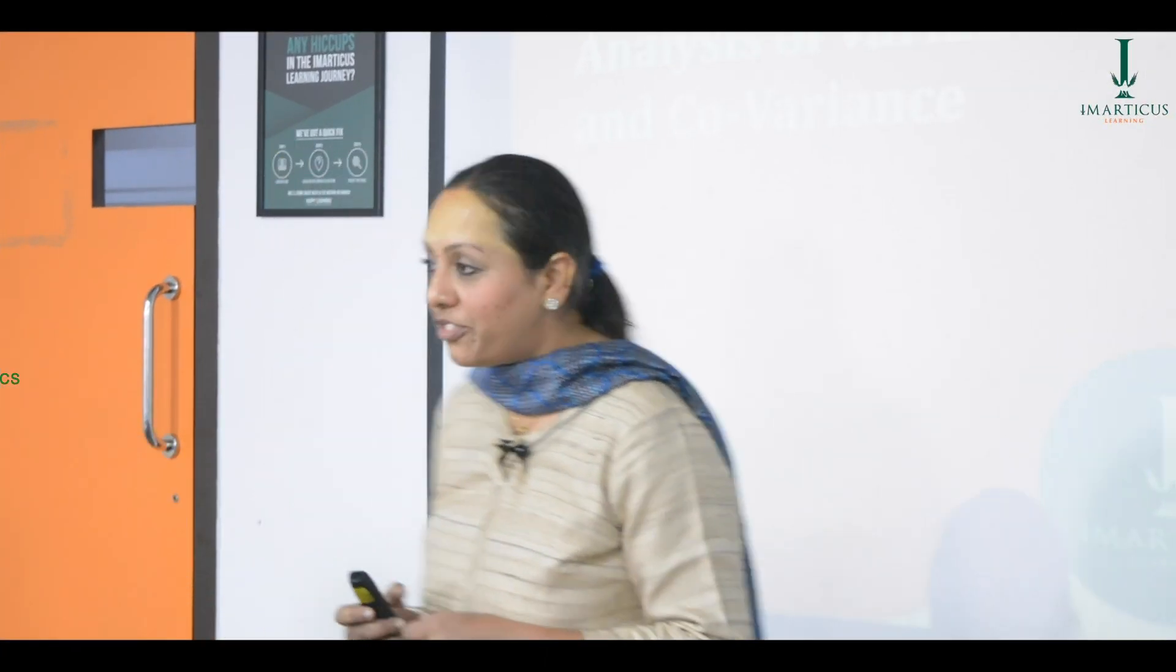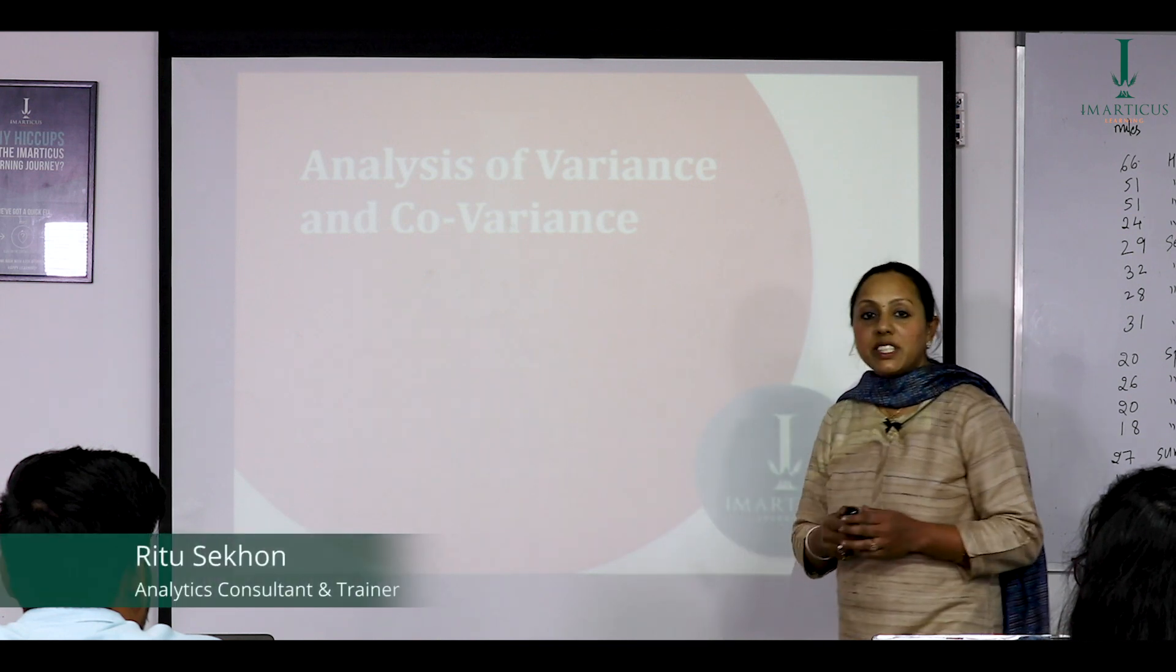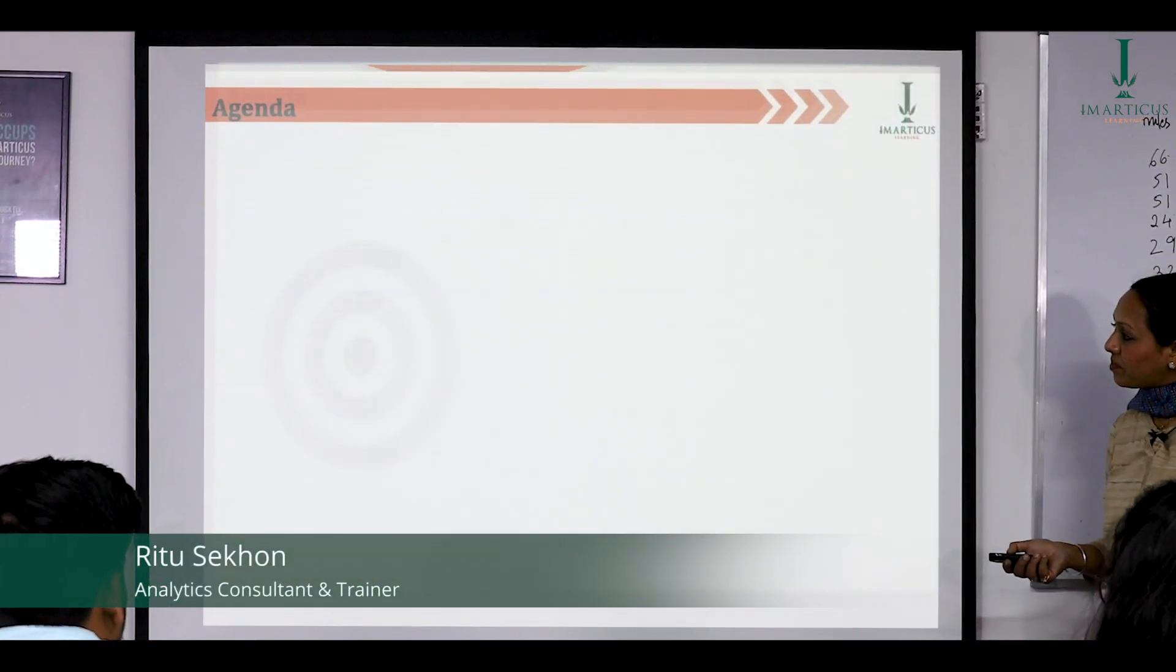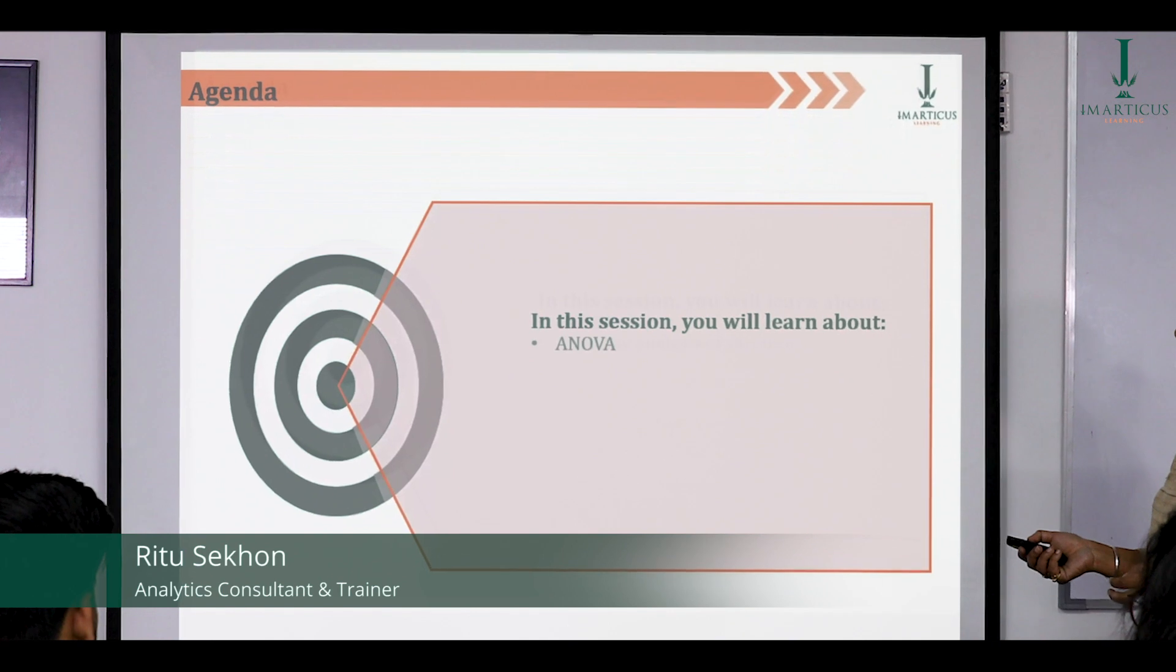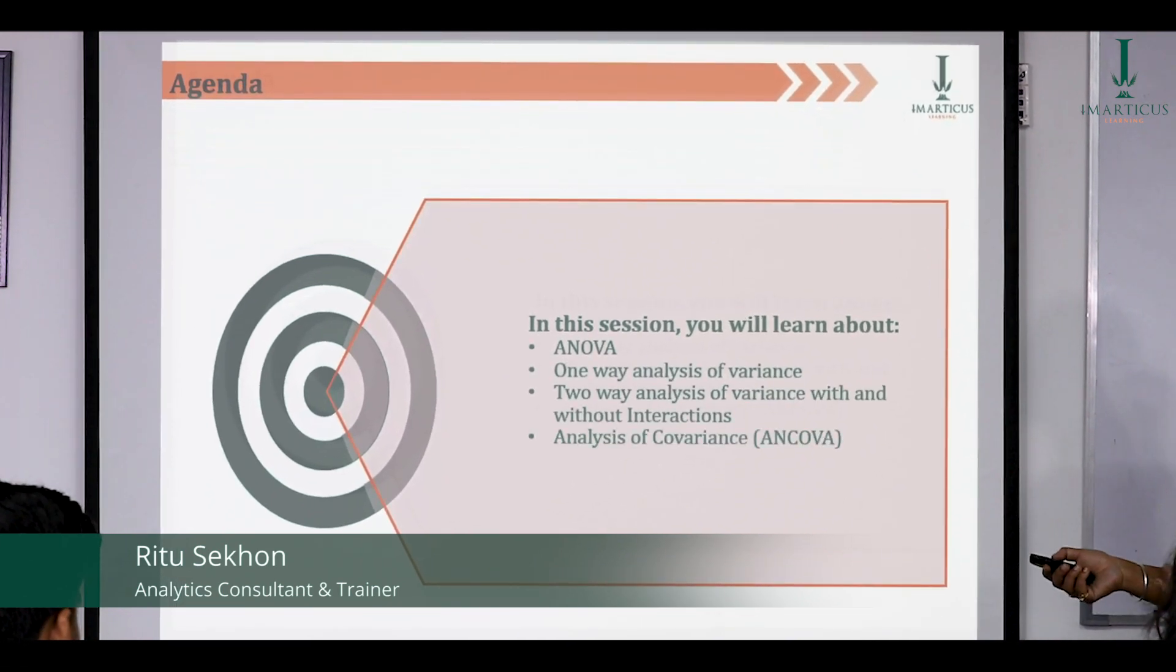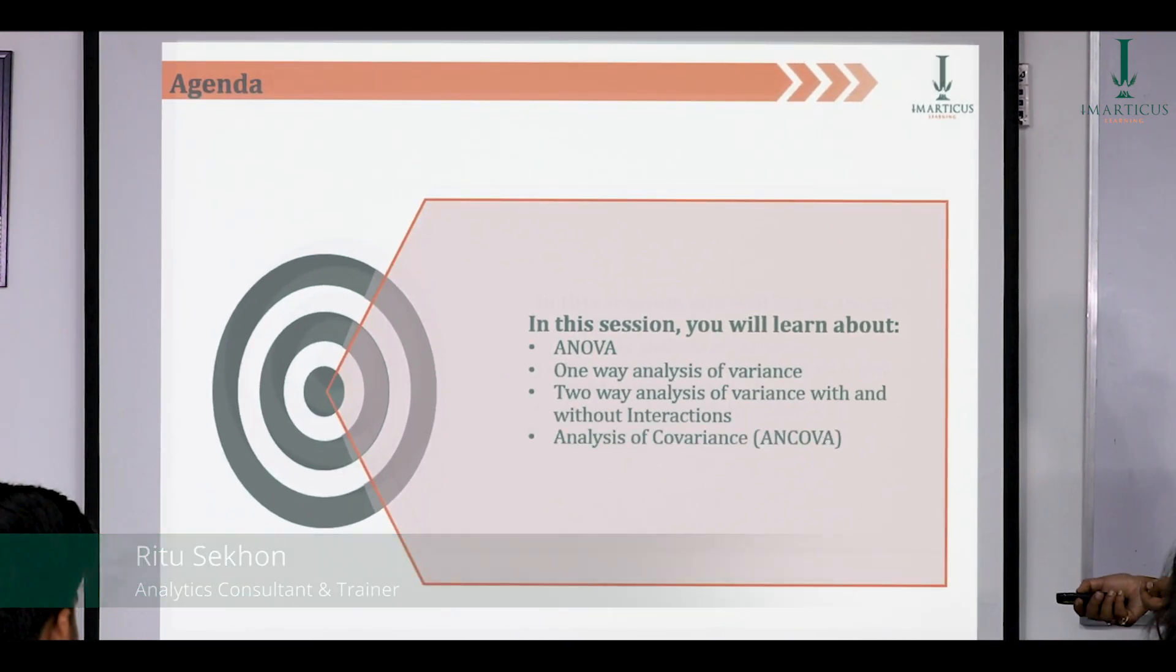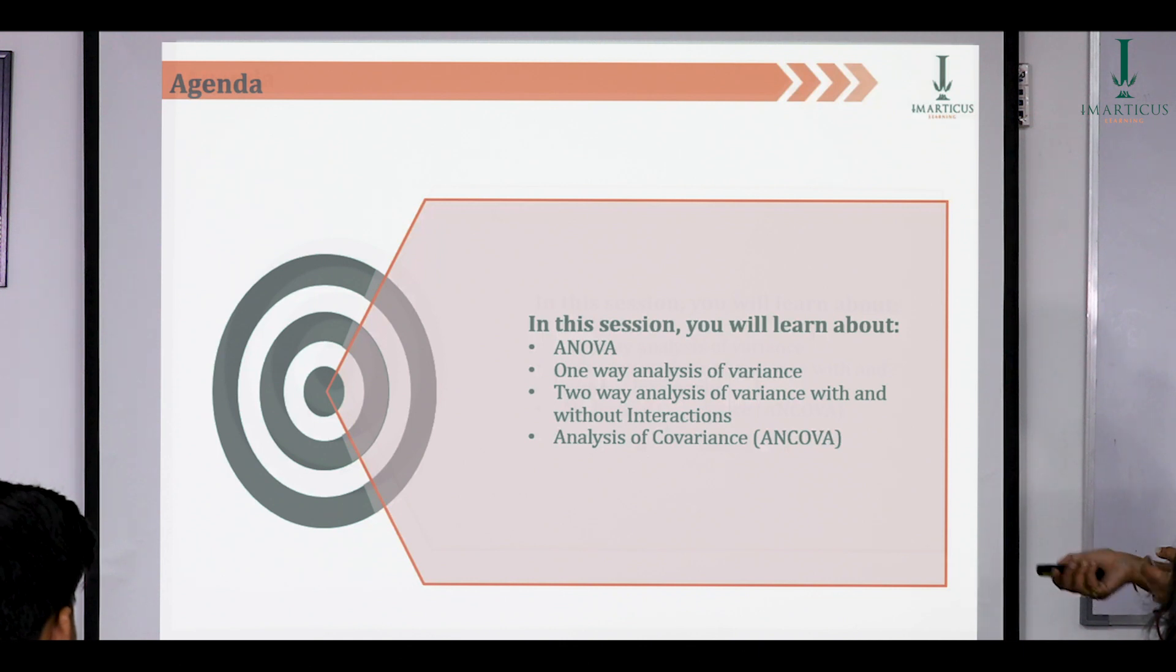Today we are covering the topic of analysis of variance and covariance. The things that we're talking about today is about ANOVA, one-way analysis of variance, two-way analysis of variance with and without interactions, and analysis of covariance.